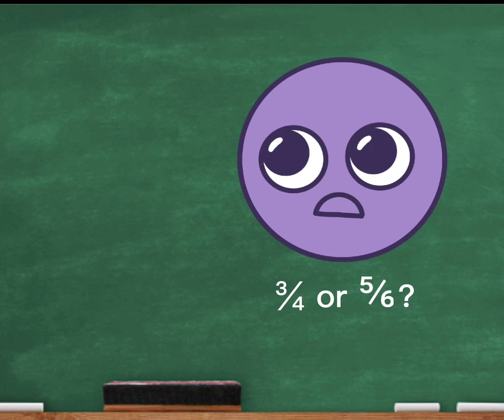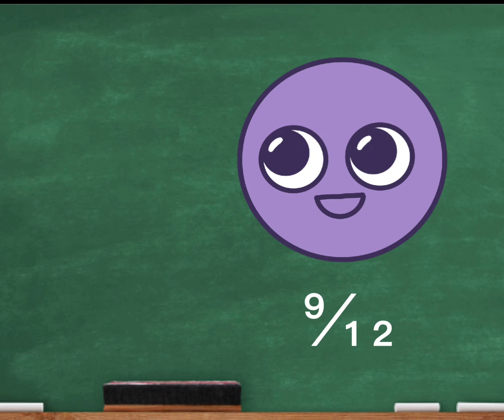What's bigger, 3 quarters or 5 sixths? What you have to do to find out is convert them to the same denominator. I'm going with 12. 5 sixths times 2 equals 10 twelfths and 3 quarters times 3 equals 9 twelfths. 5 sixths is bigger.